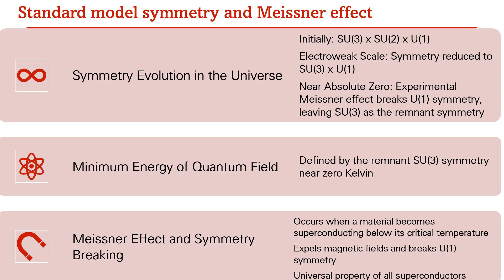I asked a very simple question: what happens when the universe keeps getting colder? It initially started with SU(3) × SU(2) × U(1). At the electroweak scale, symmetry reduced to SU(3) × U(1). But what happens near zero Kelvin? Near zero Kelvin, the Meissner effect happens, which has been verified experimentally through many experiments and through understanding many materials. It is found that the Meissner effect breaks U(1) symmetry, leaving SU(3) as the remnant symmetry for the vacuum near zero Kelvin. The minimum energy of the quantum field is therefore defined by the remnant SU(3) symmetry near zero Kelvin.